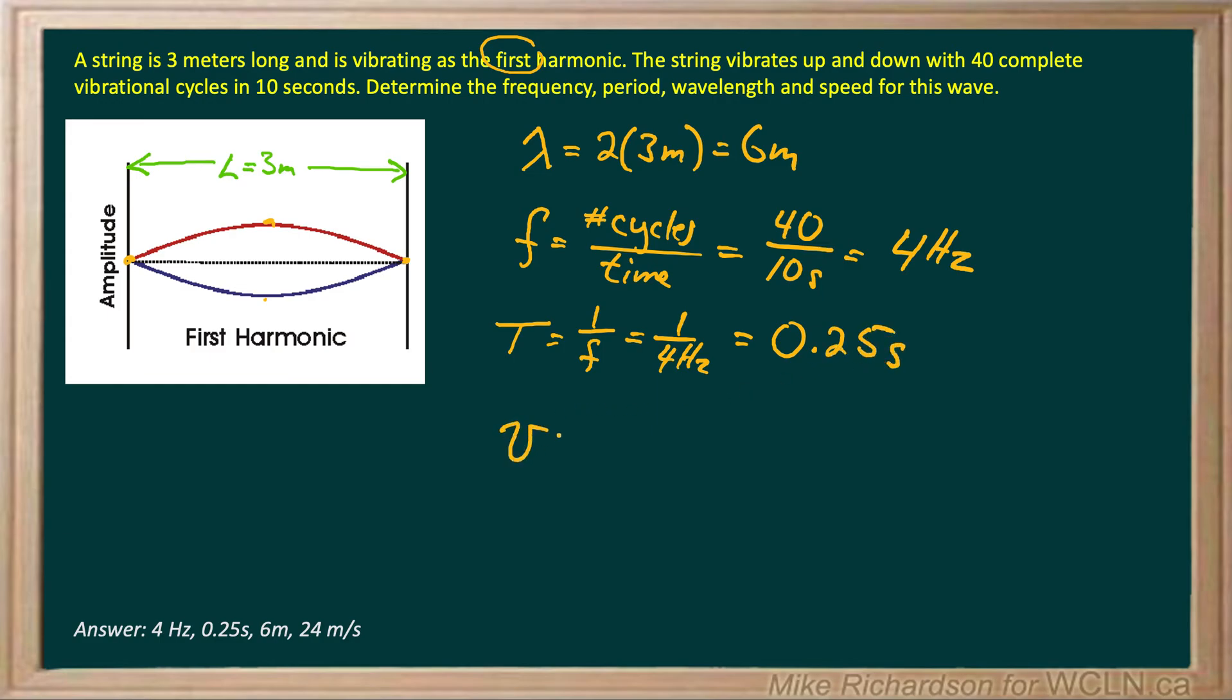Now the last step. Velocity. We have our universal wave equation: frequency times wavelength. Our frequency we've established is 4 Hertz and our wavelength was 6 meters. So that gives us a velocity of 24 meters per second. Remember the units for Hertz are actually 1 over seconds. That's where we get the meters per second from.